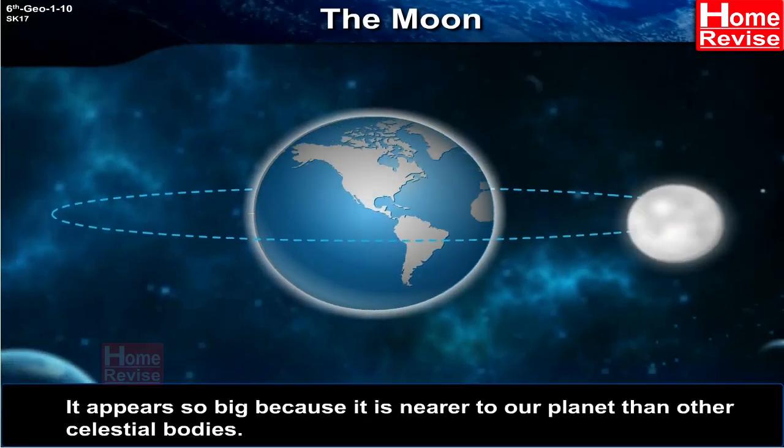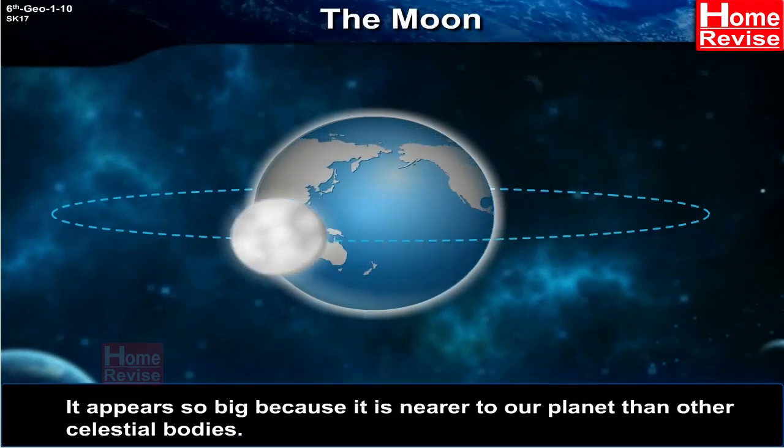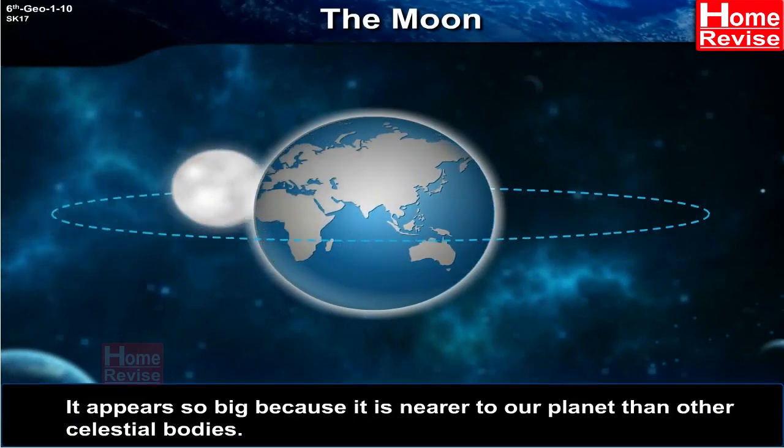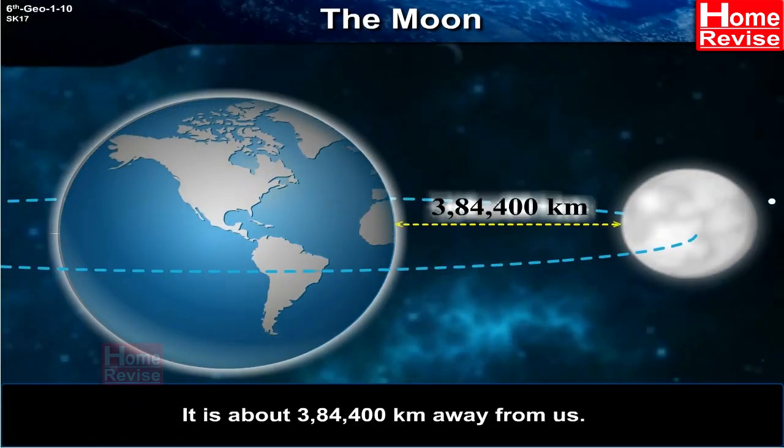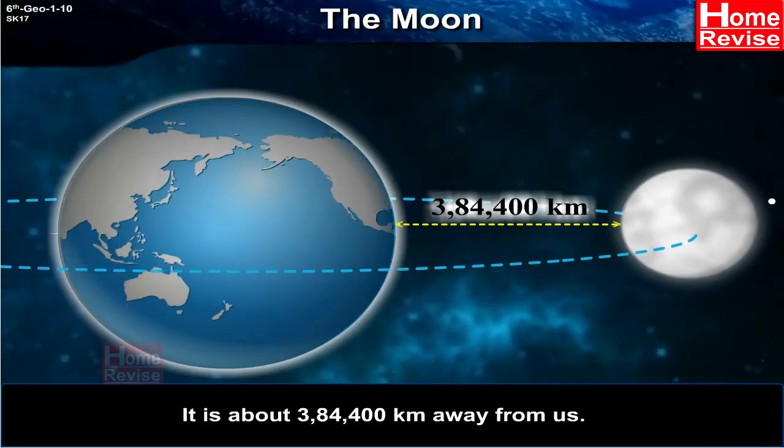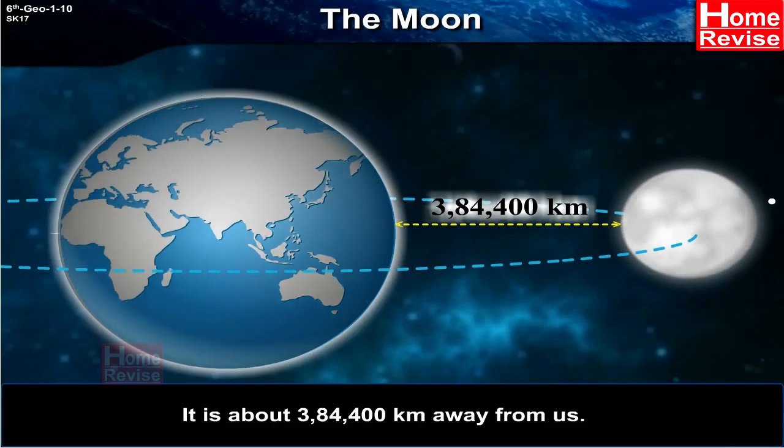It appears so big because it is nearer to our planet than other celestial bodies. It is about 384,400 km away from us.